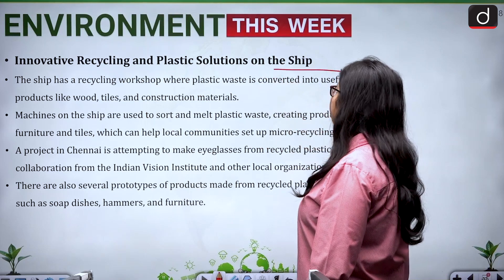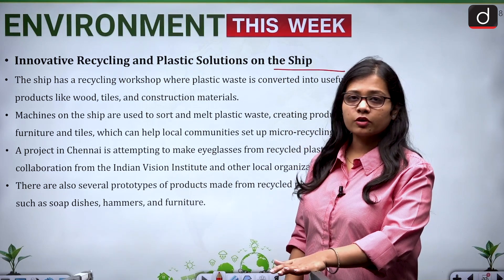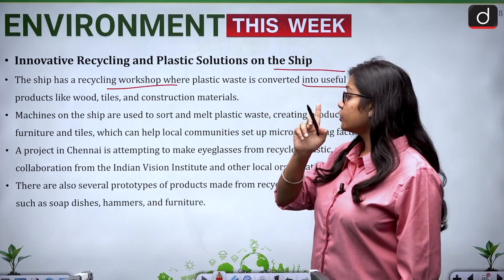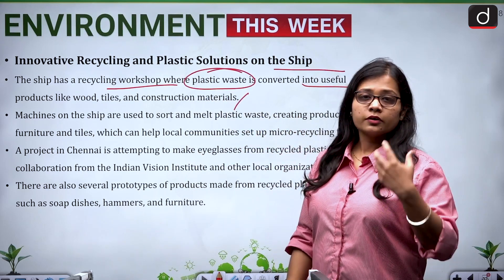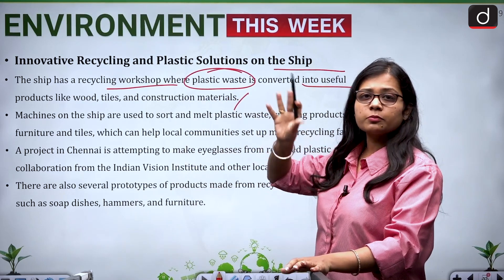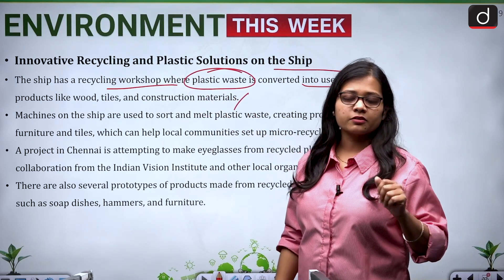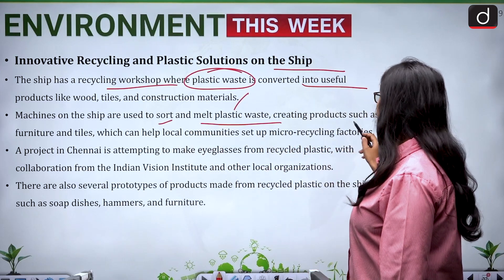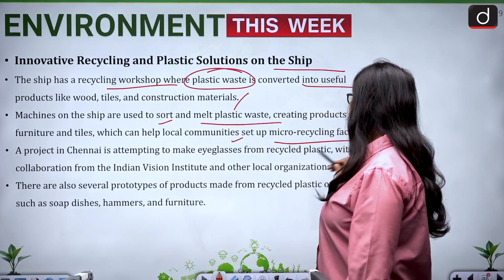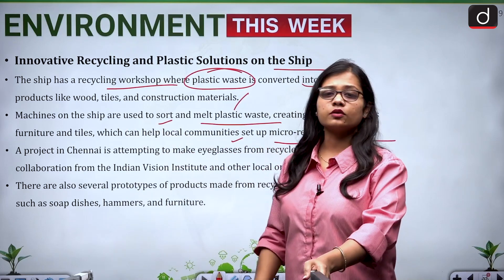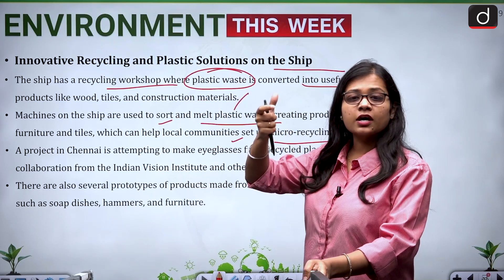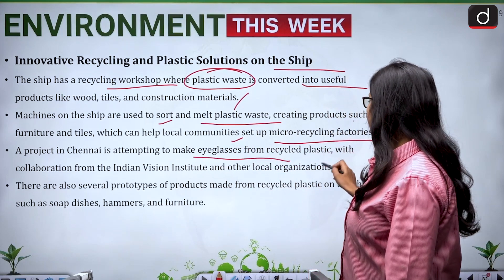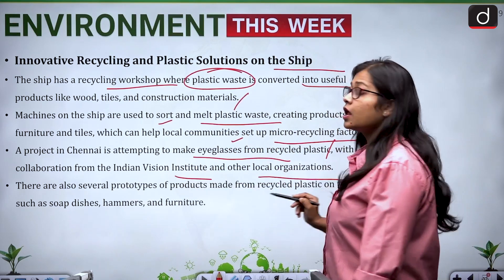The ship features a recycling workshop where plastic waste is converted into useful products like wood tiles and construction materials. Machines on the ship are used to sort and melt plastic waste, creating products such as furniture and tiles which can help local communities set up recycling factories. A project in Chennai is also attempting to make eyeglasses from recycled plastic in collaboration with the Indian Vision Institute and other local organizations.